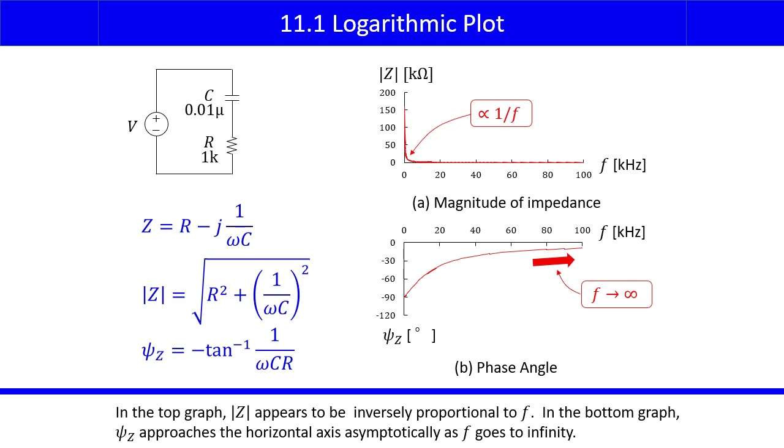In the top graph, the magnitude of Z appears to be inversely proportional to the frequency f. In the bottom graph, psi Z approaches the horizontal axis asymptotically as the frequency f goes to infinity.